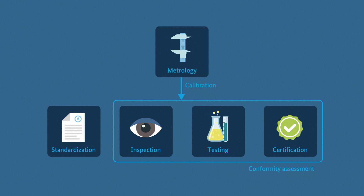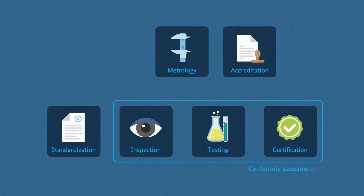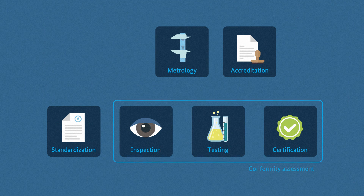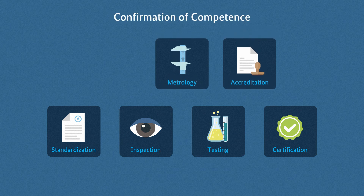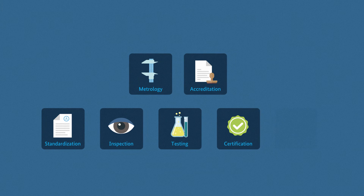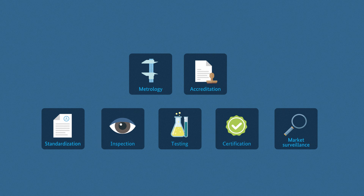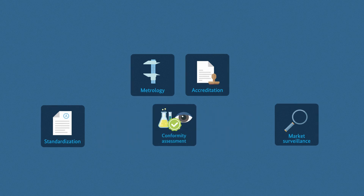Then there is accreditation, which verifies that the parties involved — above all the conformity assessment bodies — are doing their job properly. In other words, accreditation's responsibility is the confirmation of competence. Last but not least, there's market surveillance: it monitors quality compliance after a product has been placed on the market.